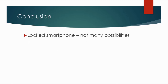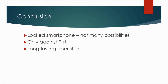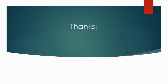In conclusion: when you have a locked smartphone, there are not many possibilities to unlock it — you need either an exploit or you have to brute force the PIN. This technique was only demonstrated against PIN, not passwords. Since a password may be more complex, you would need a different approach involving clicks and swipes at particular parts of the screen, and using a password is much more secure. Using brute force is a long-lasting operation, but there is no other option to unlock such a protected smartphone. Because of that, you need to be really patient. Thank you very much for your time — I hope you never need to use this technique.